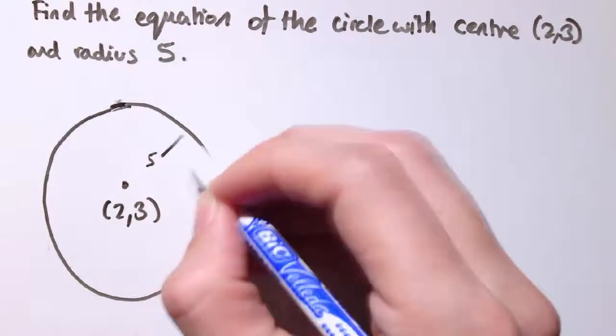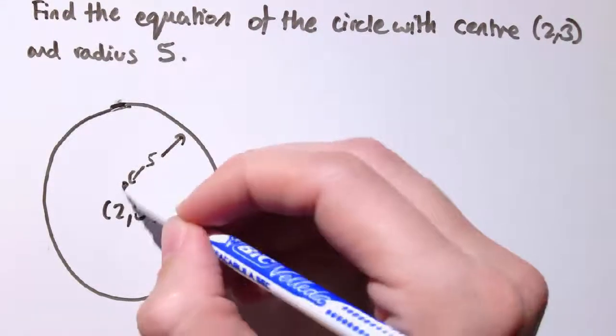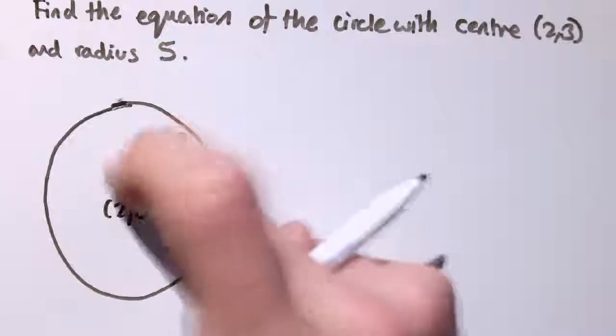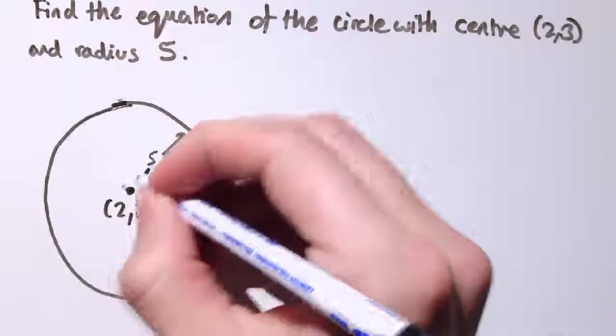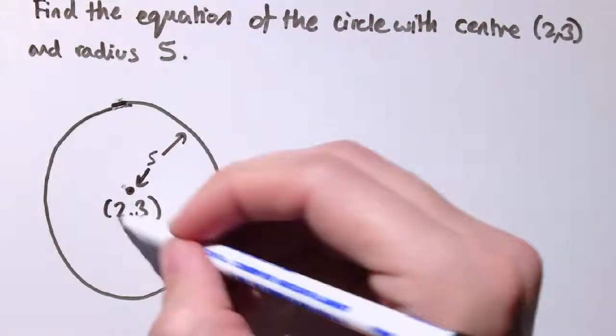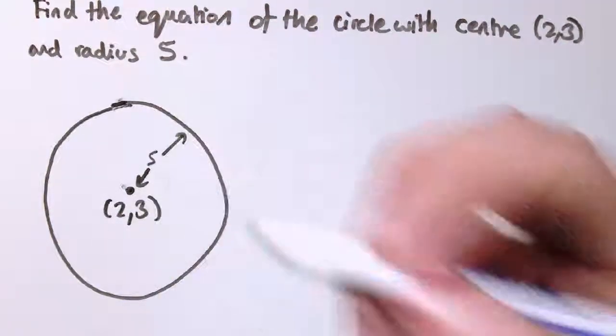So it's got radius 5. That means that the distance from the center here, let's make that a bit more central in this circle, to any point on the circumference here is 5 units.